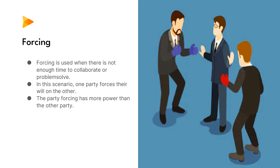Example 1: Health and safety emergency. Imagine a construction project where there is a sudden and critical safety issue — such as a structural integrity concern posing an immediate risk to workers. The project manager, who has authority over health and safety decisions, identifies the problem and orders a halt to all work until the issue is addressed. In a forcing approach, the project manager makes a decisive decision based on their authority and expertise, as the urgency does not allow for extended collaboration. The decision is imposed on the project team and stakeholders to immediately address the safety concern.